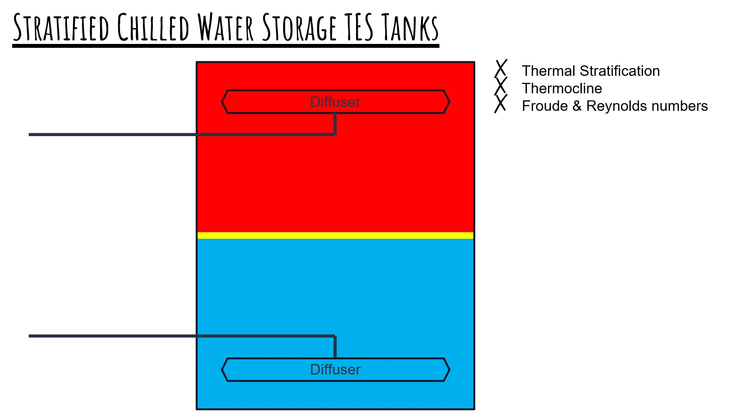Froude number and Reynolds number are the most important parameters in designing the diffuser slots, distribution system, and design flow rate.